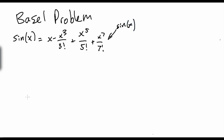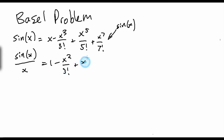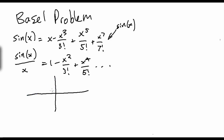What the solution calls for is that we divide both sides by x — I'll tell you why later. That gives us sine x over x equals 1 minus x² over 3! plus x⁴ over 5! and so on. Now we have this, and let's try to graph it. You might be wondering: how does trigonometry have anything to do with finding the sum of this series? Well, you'll see.